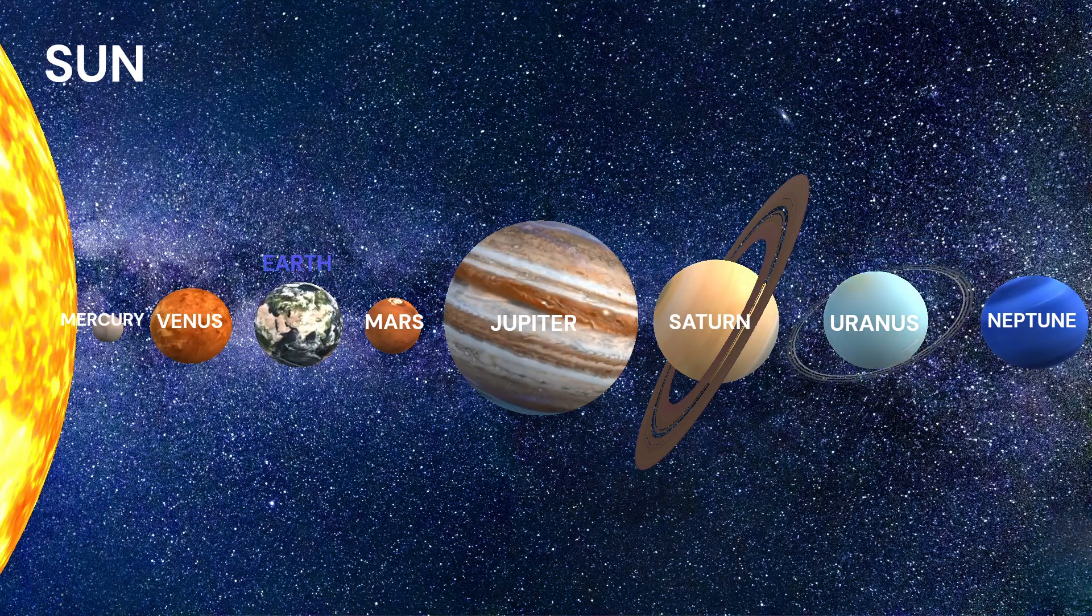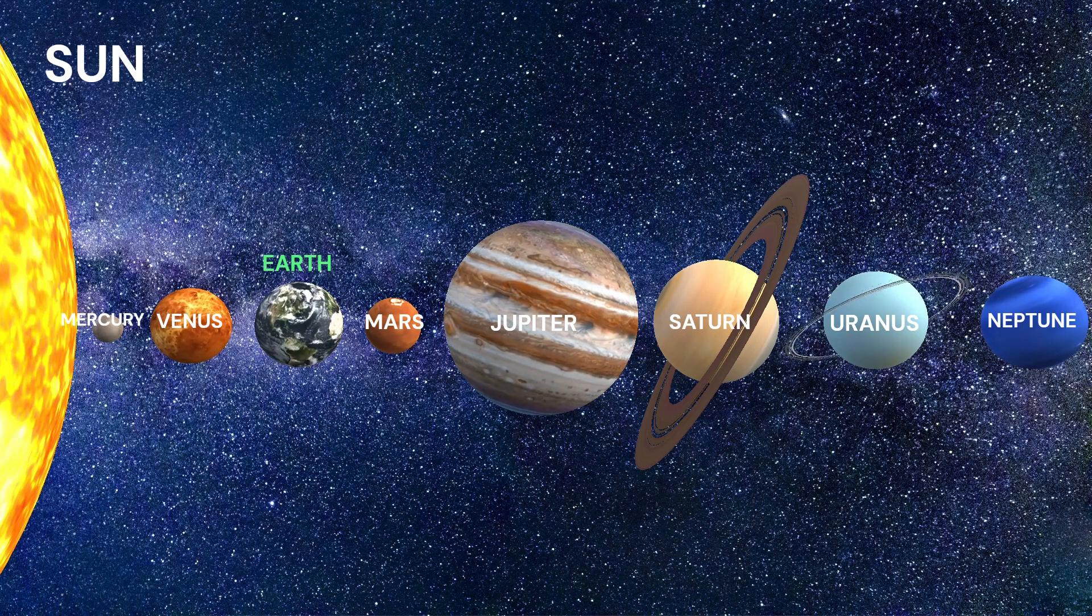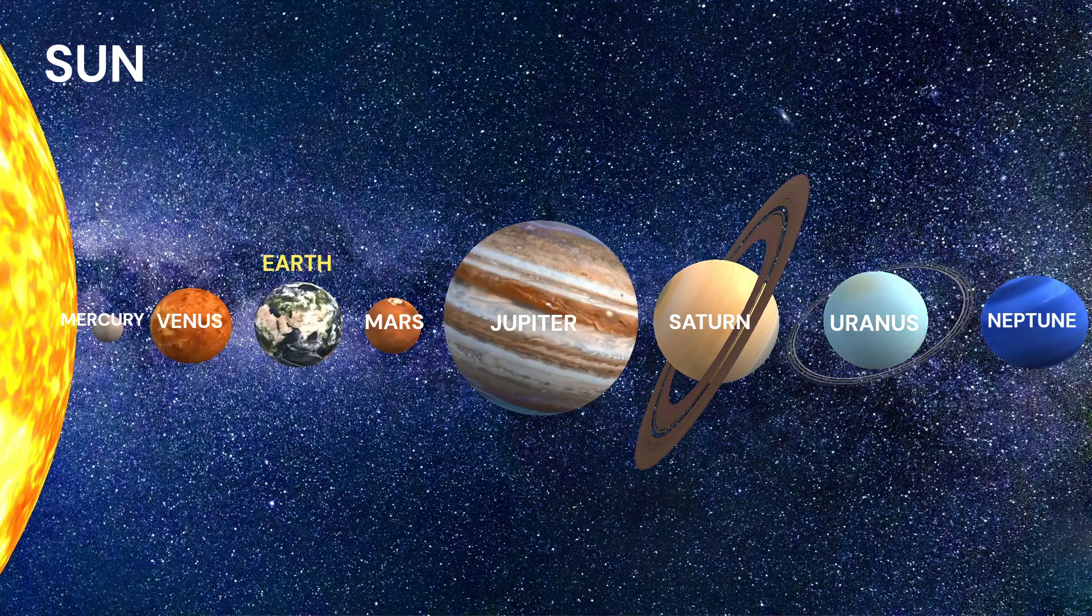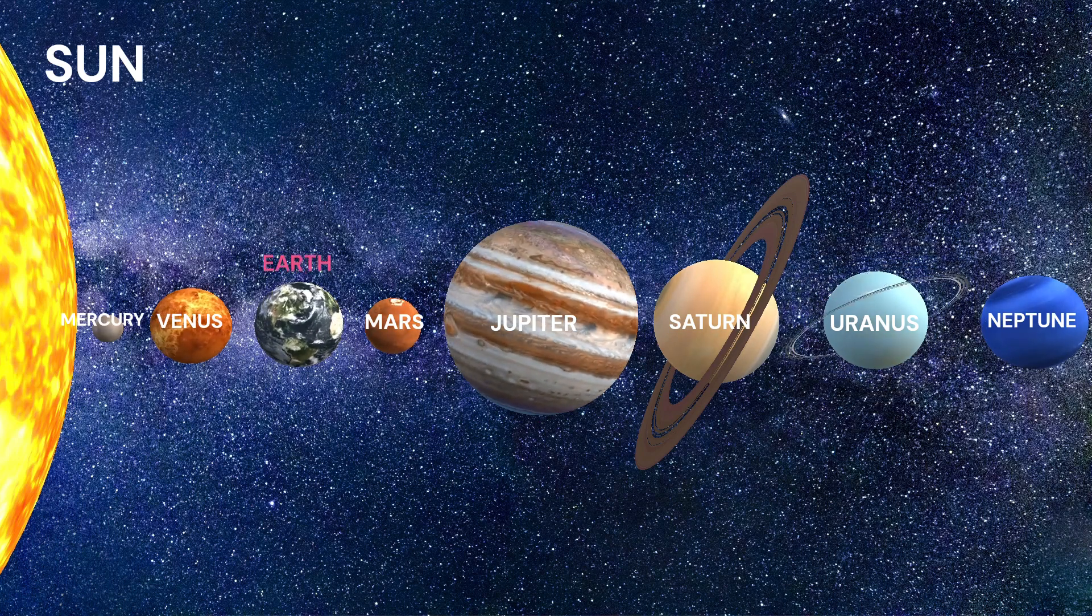The smallest planet in our solar system is Mercury. It is also the closest planet to the sun.